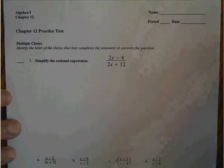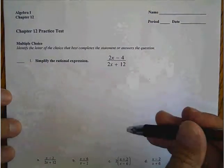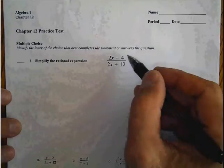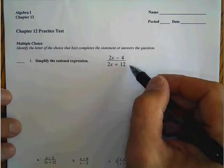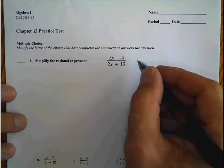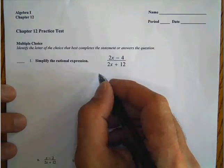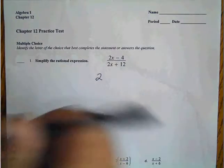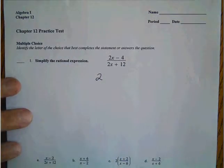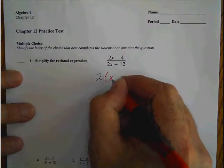Chapter 12 test, problem 1. Our goal in the first question is to look at the top and the denominator and determine what is the GCF of the top. The GCF of the top is going to be 2, which leaves us an interior of x minus 2.